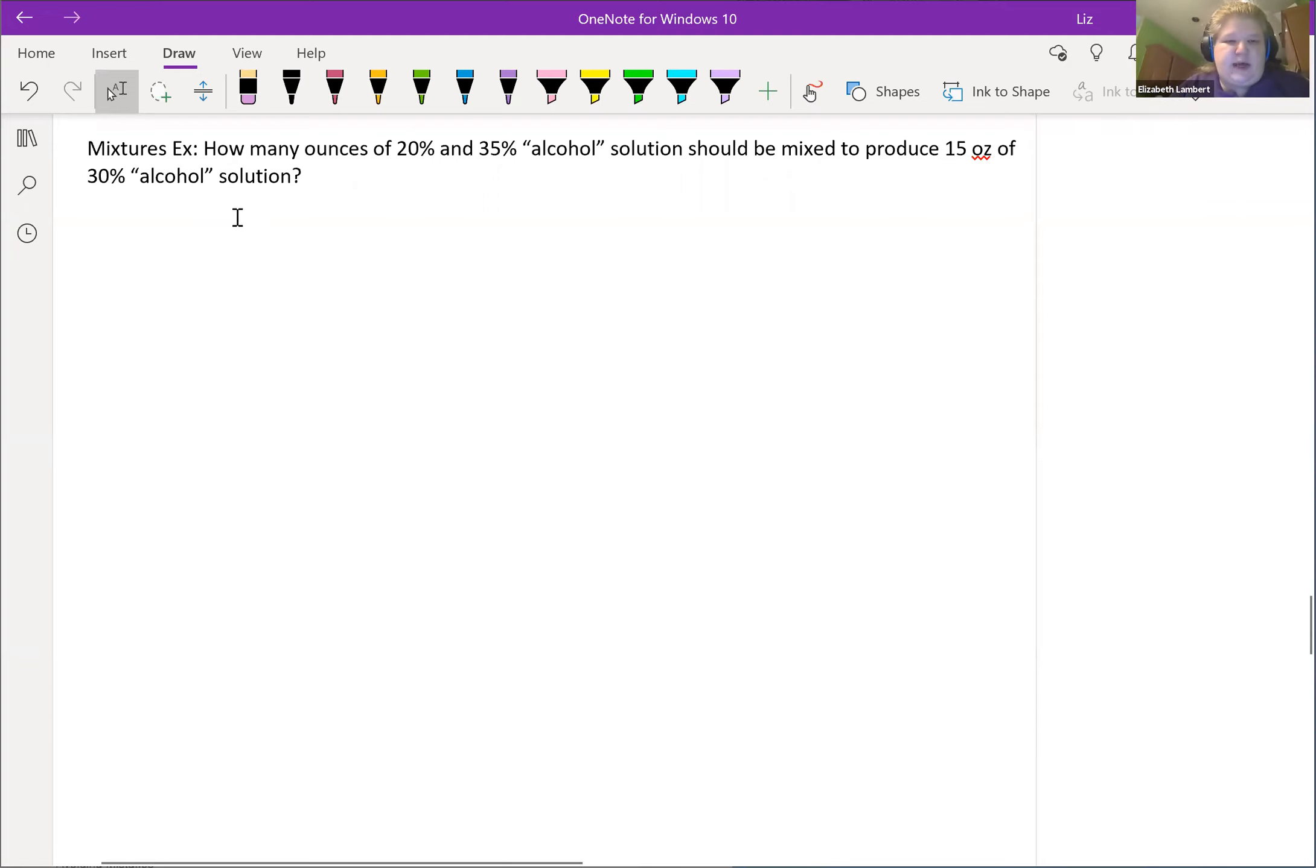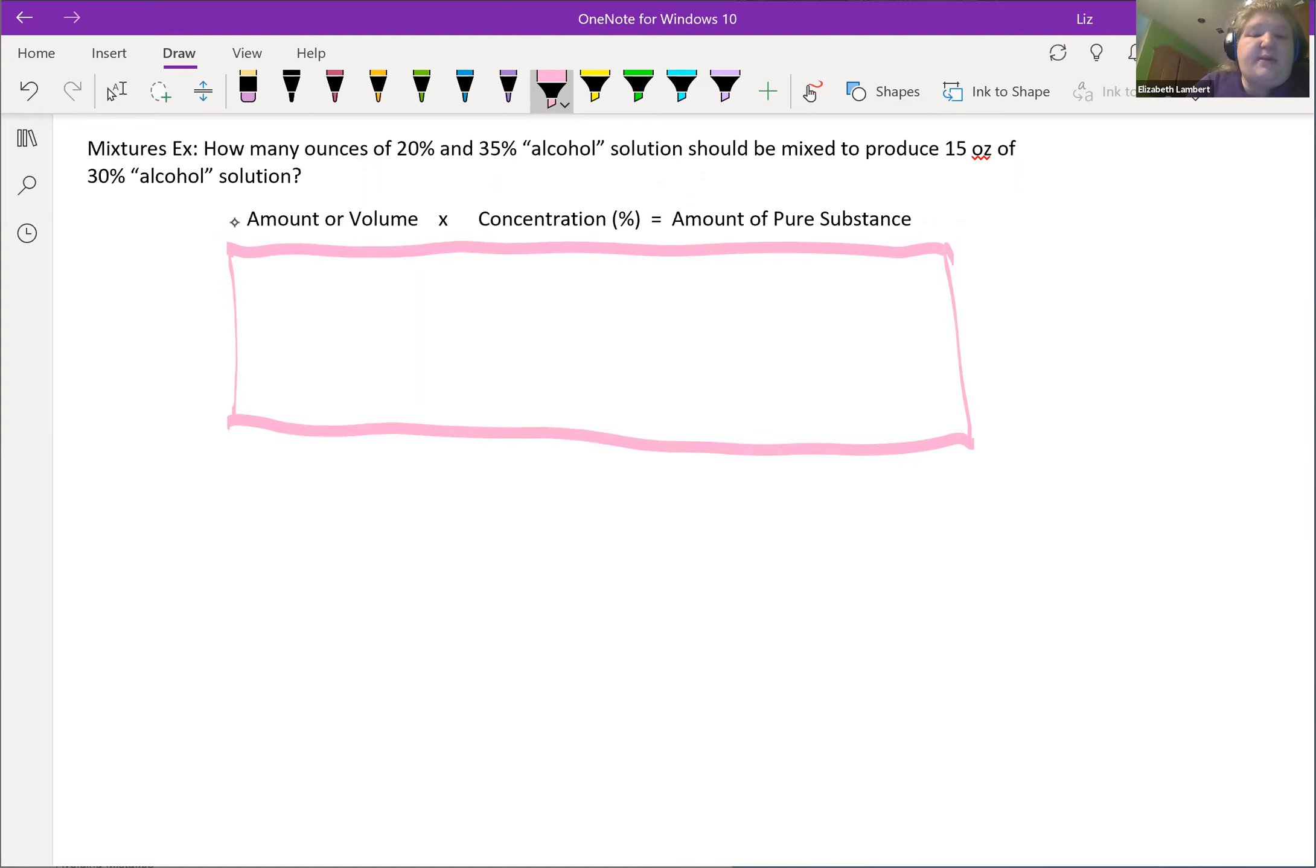Let me type that just to save us some time. So we have the amount or volume. I'm just going to use an x there. Concentration, which is really the percentage usually as a decimal. And this is going to be the amount of pure substance. That is what we are going to use to set up a table, which is apparently a pink highlighter table on this one.